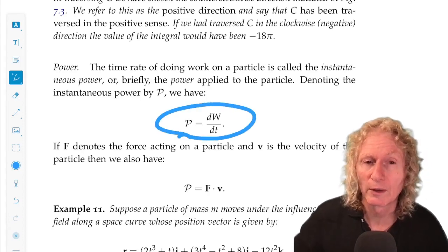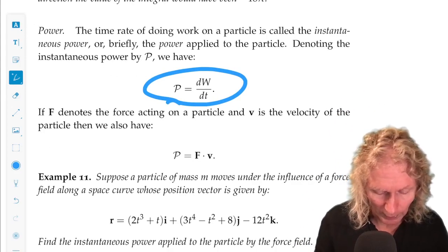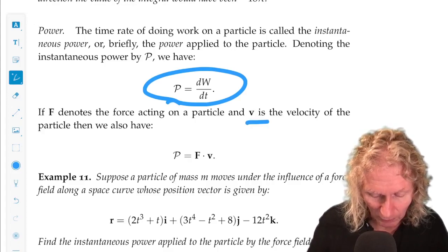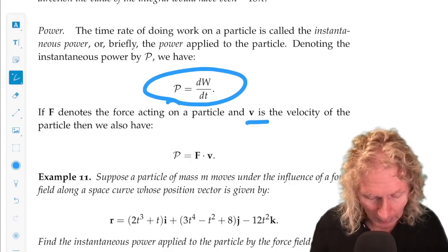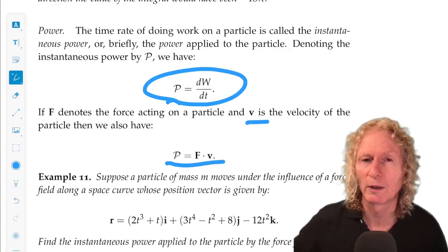So, there's another slick way of writing this. If F denotes the force acting on a particle, and v is the velocity of the particle, then the power is just F dot v, and you should verify that to yourself.